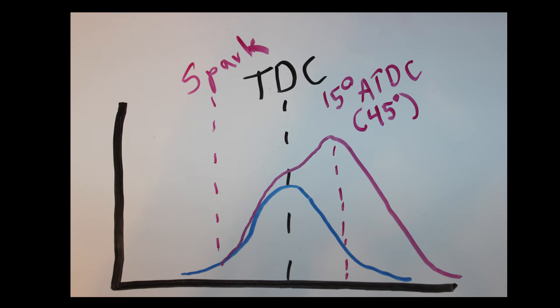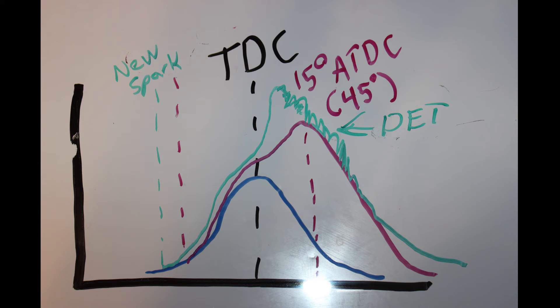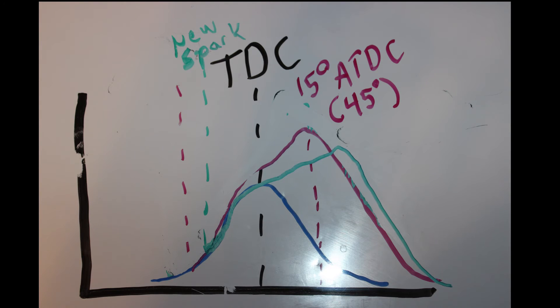Now if you advance timing and move that pressure point to the left, you end up with a much higher peak pressure that can go above your detonation threshold and cause detonation in your fuel. If you move that peak pressure point to the right, then you end up with a much lower pressure that you're not able to take mechanical advantage of, and you end up losing power out your tailpipe.